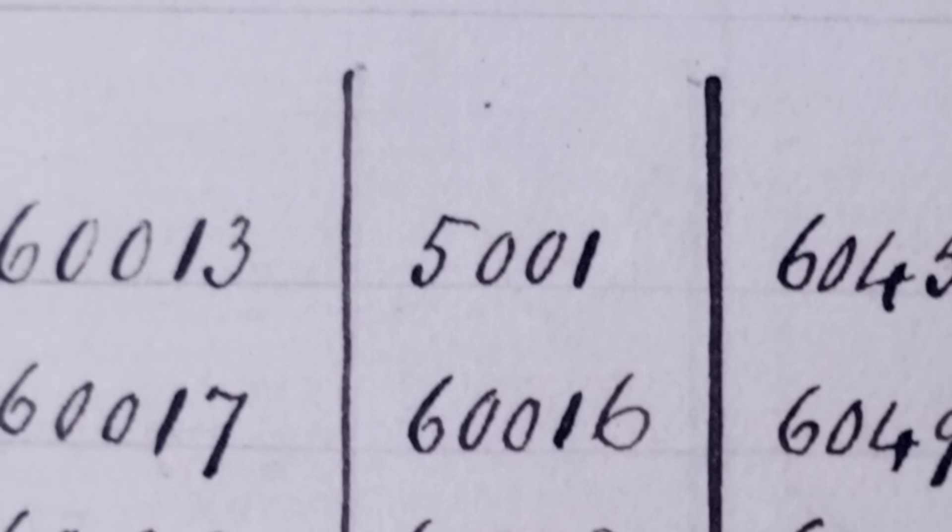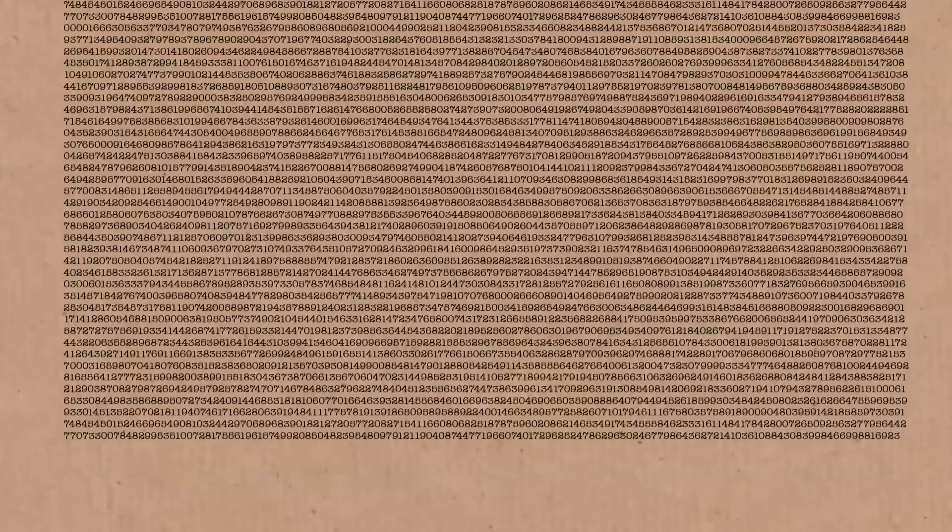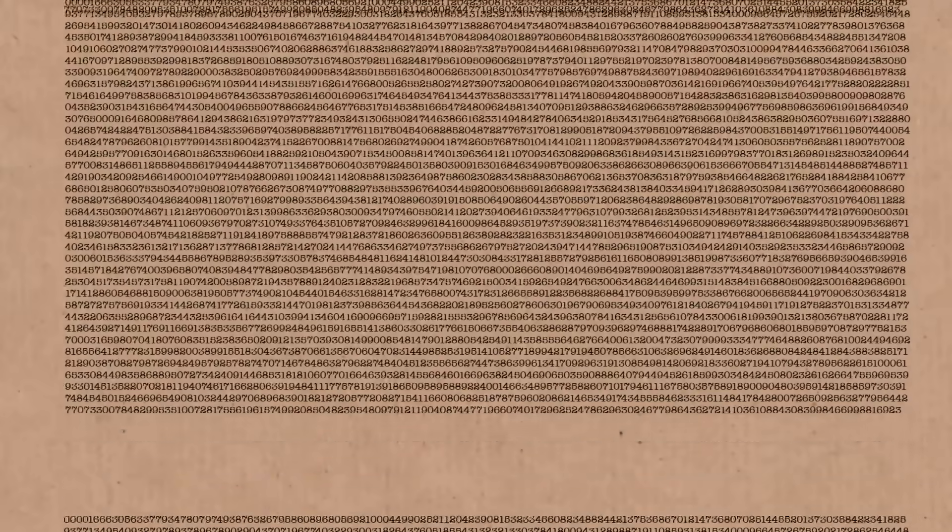So the first one out of the gates is 60,013, and Shanks is claiming after 5,001 digits its reciprocal will repeat. So 1 divided by 60,013, it will seem random for 5,001 digits, and then you're like, this is familiar, and it'll be the same as earlier. Shall we check one of them?